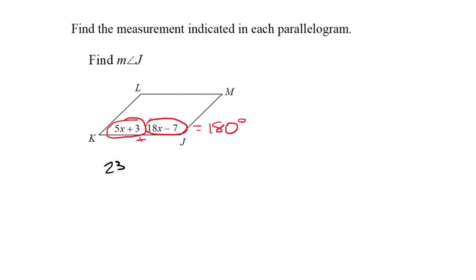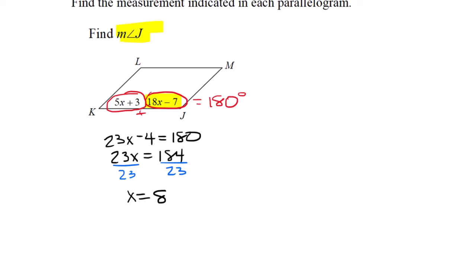5x plus 3 and 18x minus 7 gives 23x minus 4 equals 180. 23x equals 184, divide by 23, x equals 8. Like the last problem, x isn't what they wanted. They want angle J, which is 18 times 8 minus 7, equals 137 degrees.